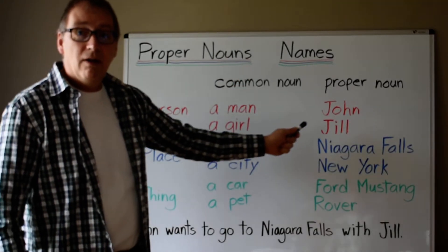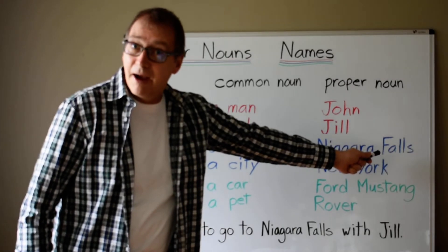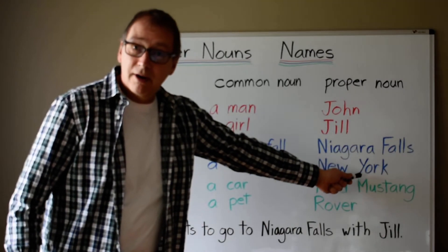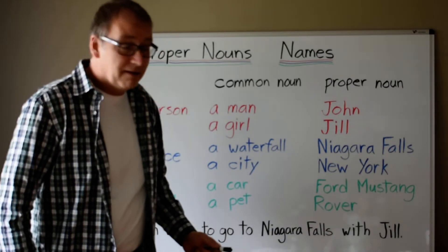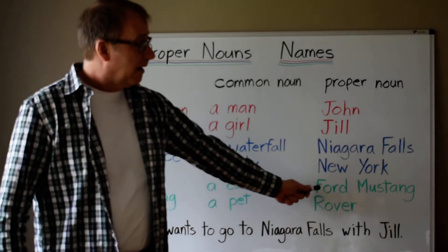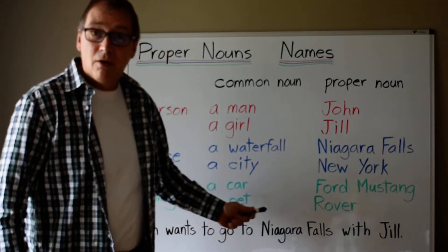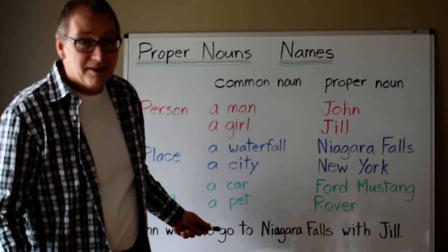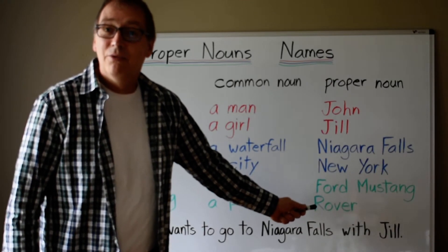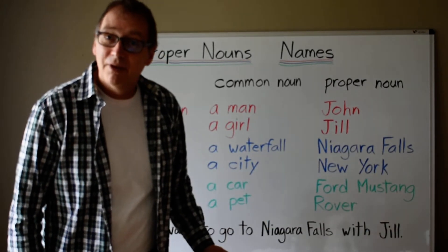A waterfall — Niagara Falls. You see the capital letters. New York for a city. Also, a car — a Ford Mustang. Or, for a pet, maybe you have a dog named Rover. Rover needs a capital R.